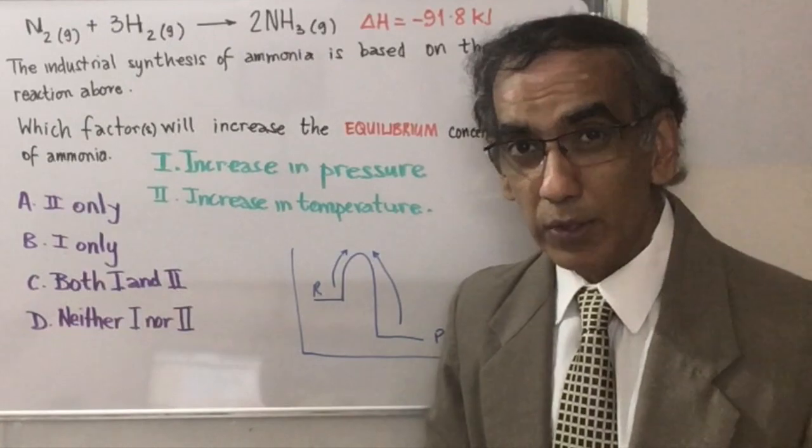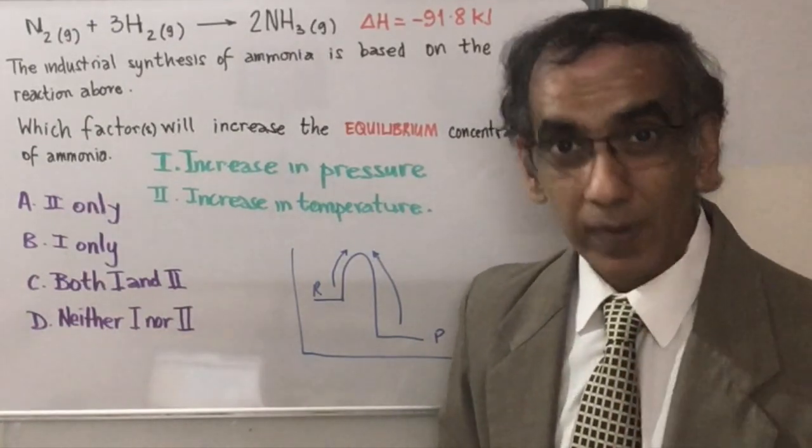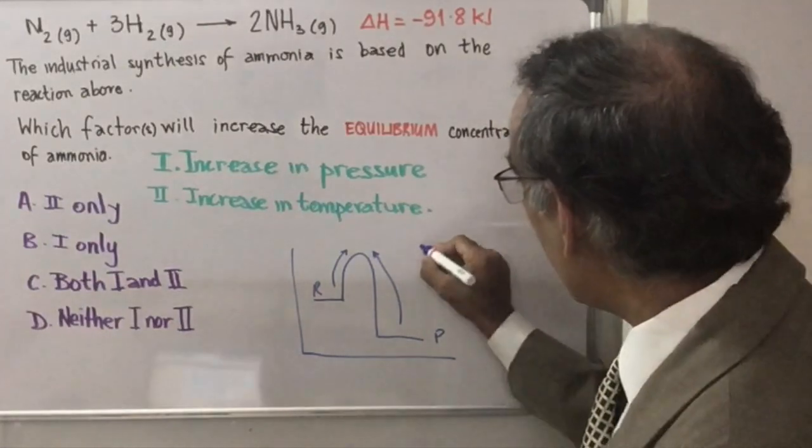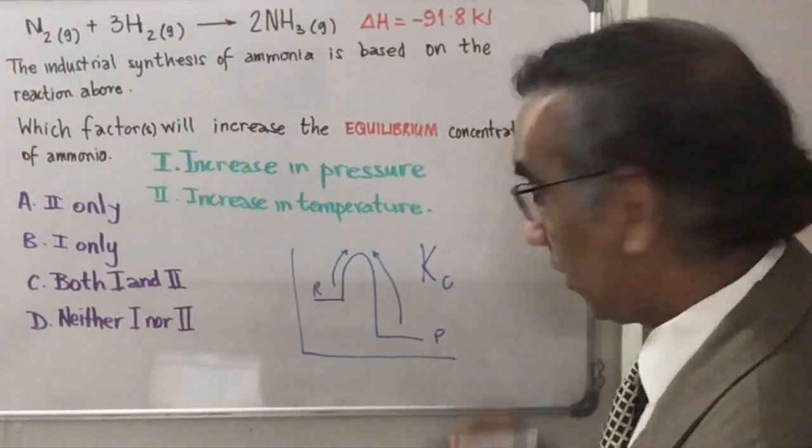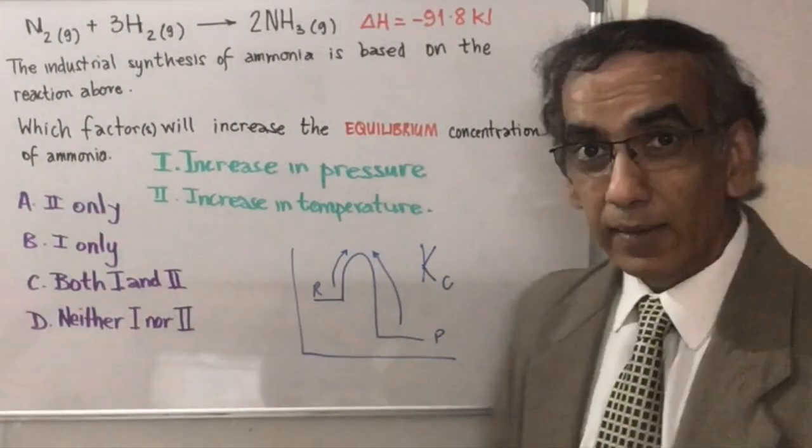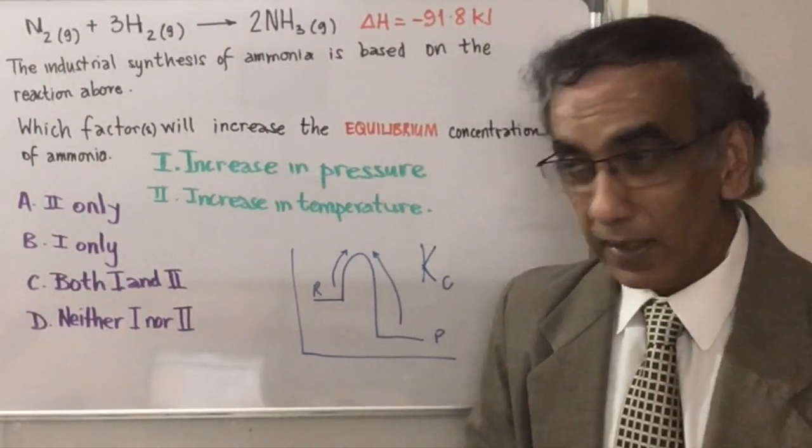Temperature changes the equilibrium concentration because temperature is the only factor that can change Kc, the equilibrium constant. It sets up a new equilibrium in this system and creates a new value for Kc.